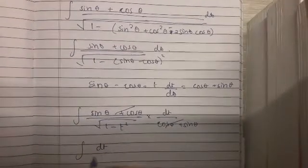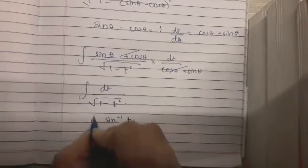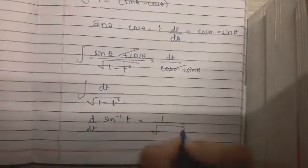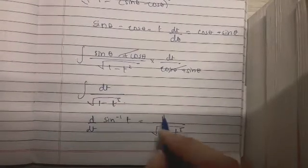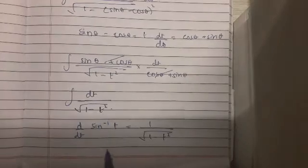Now the integral becomes dt upon root 1 minus t square. And we know that the differentiation of sin inverse t would be 1 upon root 1 minus t square which is why the integration of 1 upon root 1 minus t square is sin inverse t.